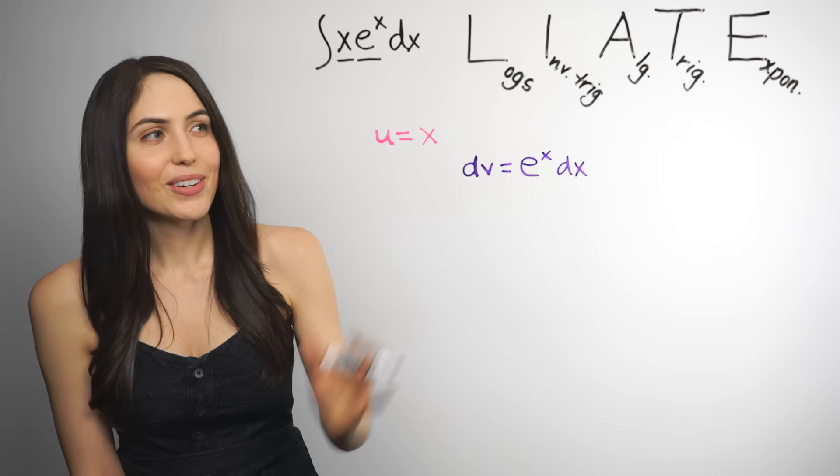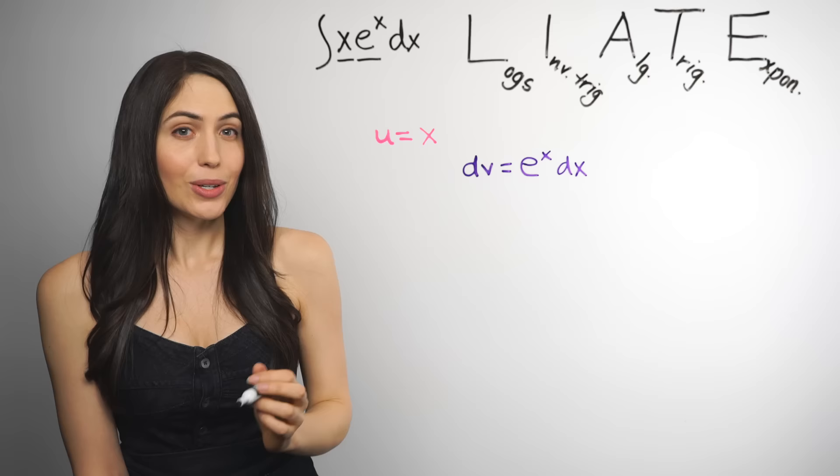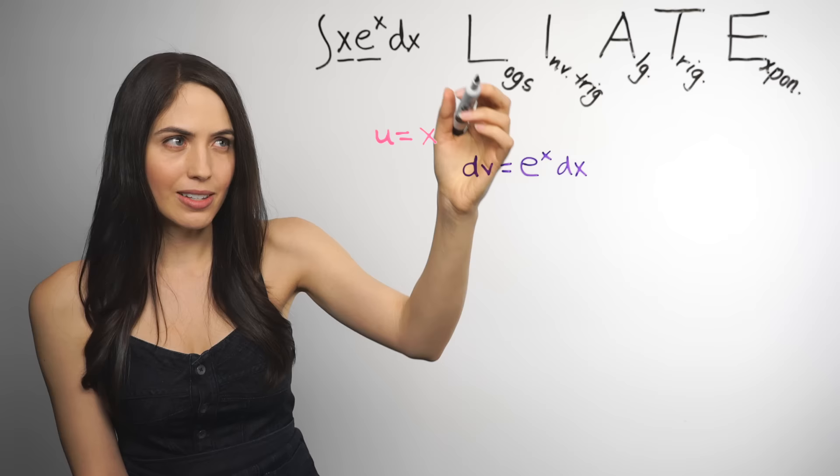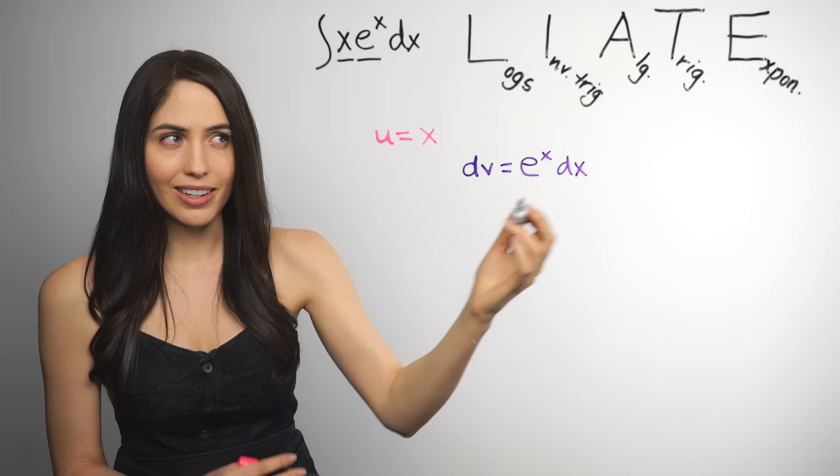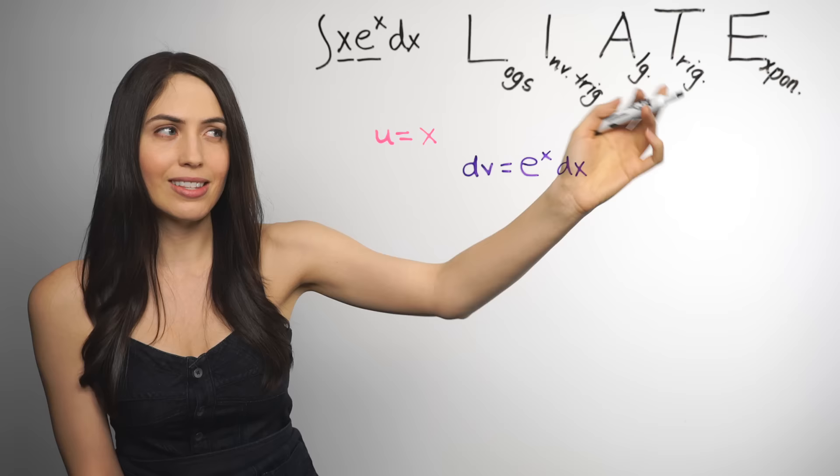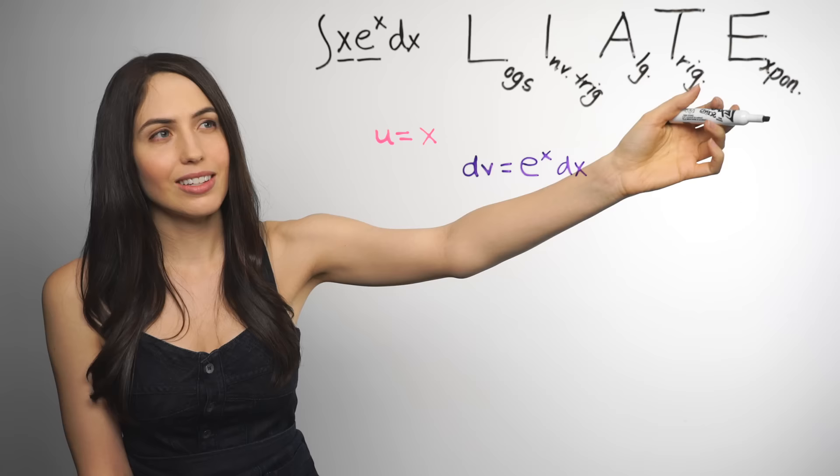So here's our trick. It's an acronym to help you pick u. So u will be the first thing you find in this list of letters. And dv will be the next thing you find. L stands for logs. That could be natural log lnx or normal log. I for inverse trig functions like arcsine x, cosine inverse of x. A stands for algebraic or polynomials. So powers of x, x squared, x, x cubed. T for trig functions like straight up sine, cosine. E stands for exponentials like e to the x.